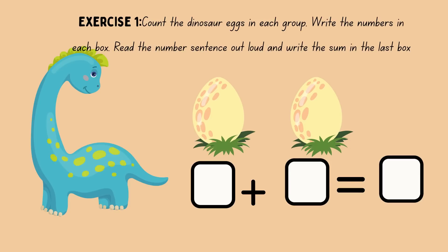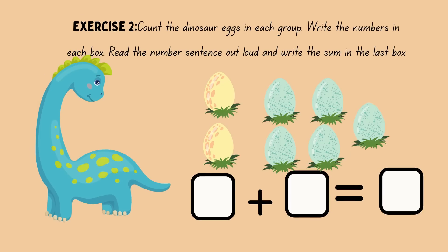It is time to practice what you have learned. Pause the video to complete the following exercises. Direction: Count the dinosaur eggs in each group. Write the numbers in each box. Read the number sentence out loud and write the sum in the last box. The first exercise has already been completed for you. Follow the directions to complete exercises 2, 3, and 4.